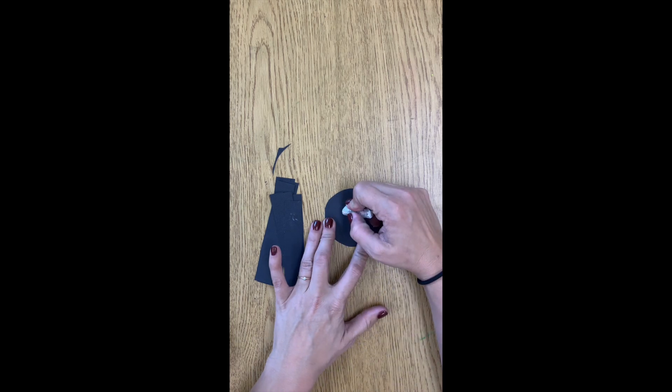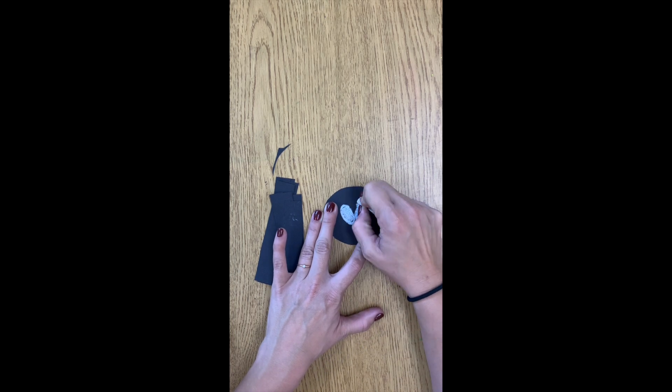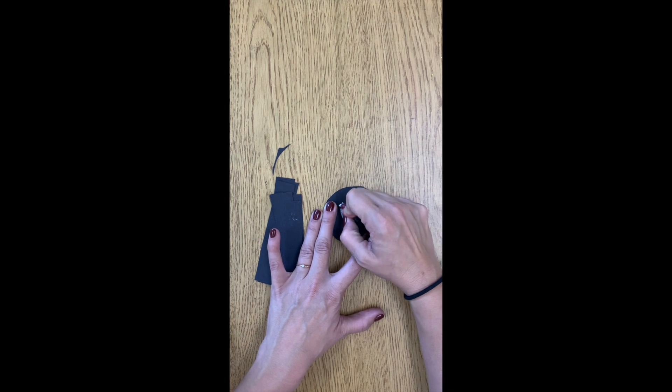Next, I am going to draw the face for my spider. I used a white oil pastel to do 2 large eyes and a black oil pastel to draw some pupils. And I also added a little white smile.